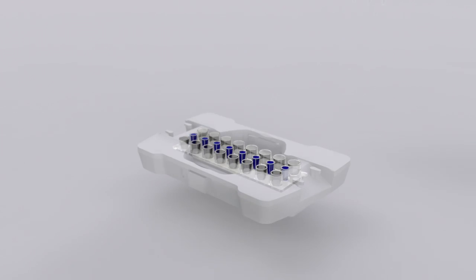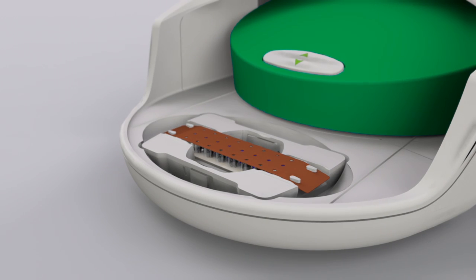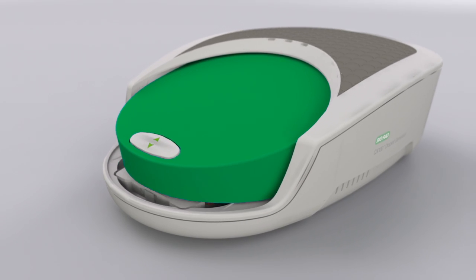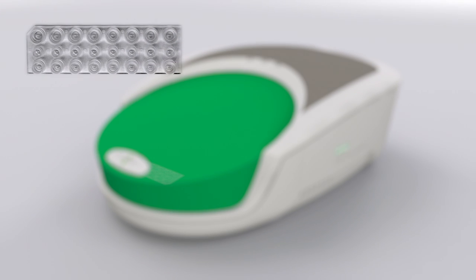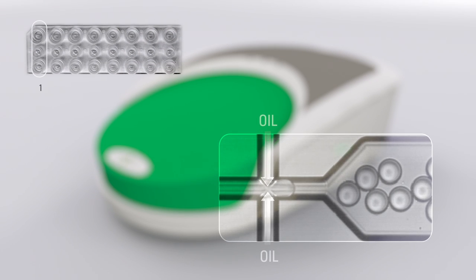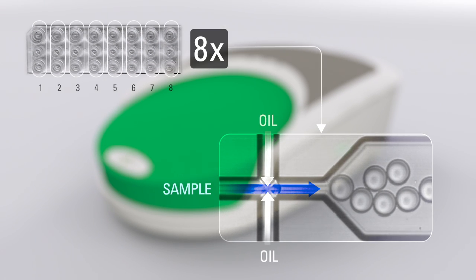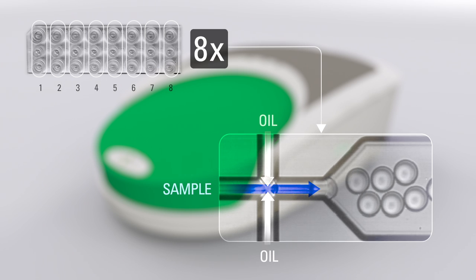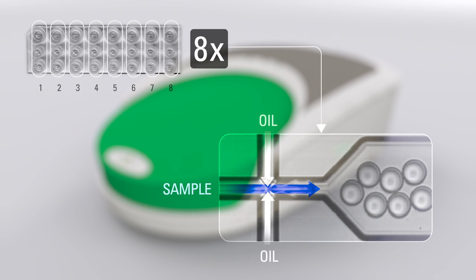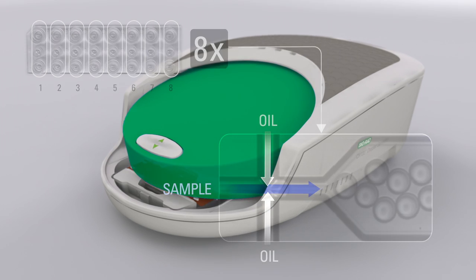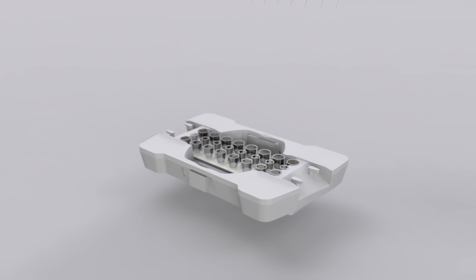Once the cartridge is loaded with prepared samples and oil, it is placed in the QX100 Droplet Generator. Using microfluidic technology, the Droplet Generator combines the samples and oil to create an emulsion of approximately 20,000 mono-sized droplets for each sample. Every droplet contains a nanoliter volume of the sample, including any target sequences that may be present.